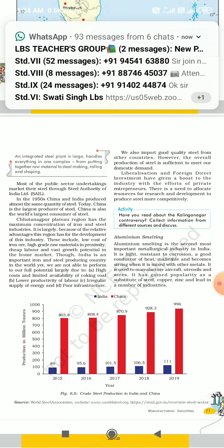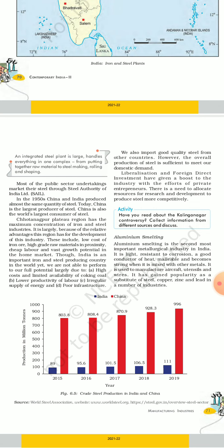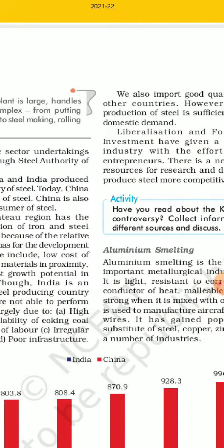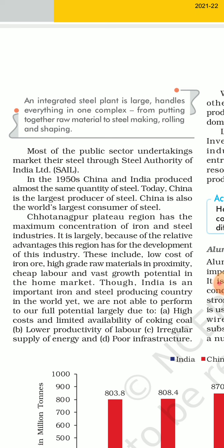We should start from the 1950s — in the 1950s, China and India produced almost the same quantity of steel. Today, China is the largest producer of steel and also the world's largest consumer of steel. In 1950, India and China both had the same volume of steel production in million tons.